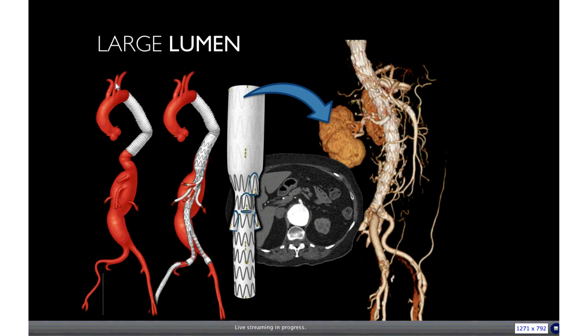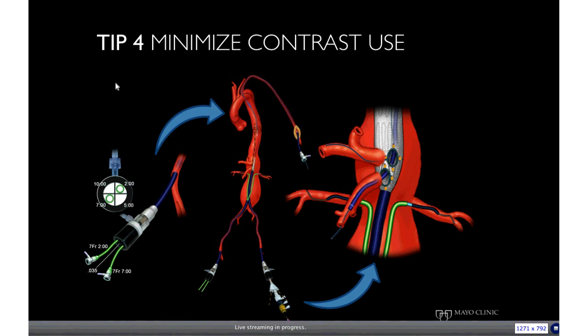The fourth tip is to minimize contrast use. These are incredibly challenging procedures, and using standard techniques with angiographies for every step results in large amounts of contrast. Minimizing contrast can be done multiple ways — diluting the contrast to 30% or 50% is always a good idea. You may precatheterize vessels, which gives comfort for precise fenestration deployment. Currently, it's really about imaging — intraoperative fusion imaging combining CT and angiography has greatly revolutionized the way we treat these patients.